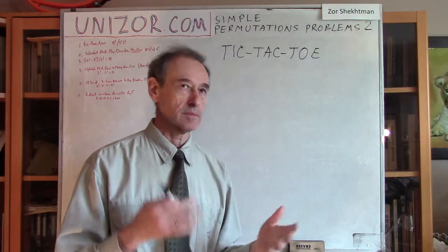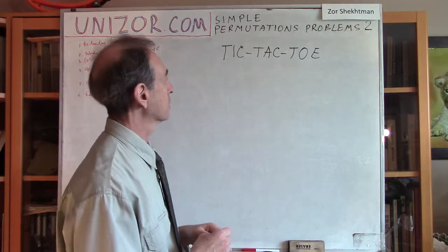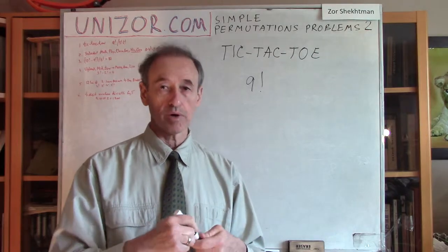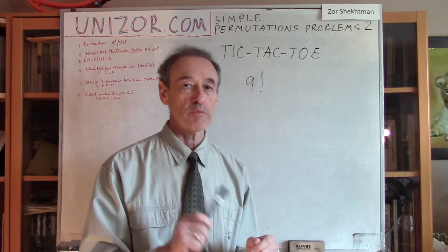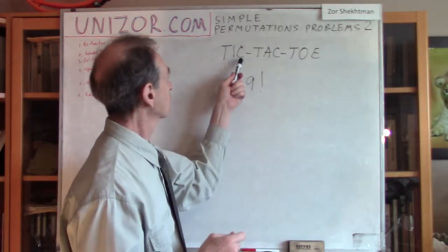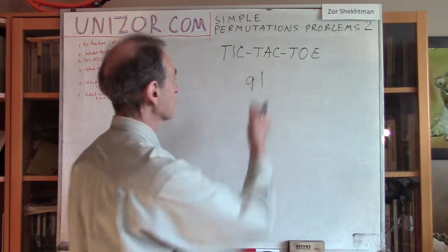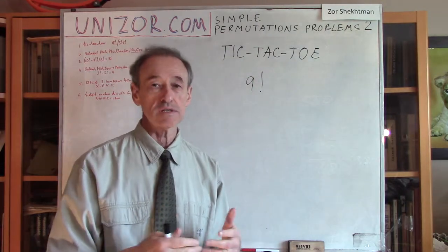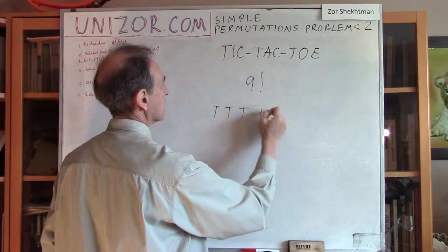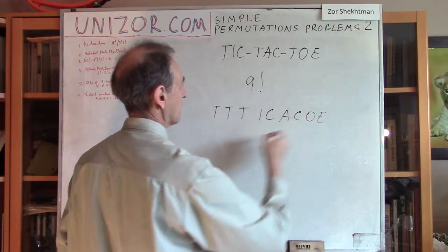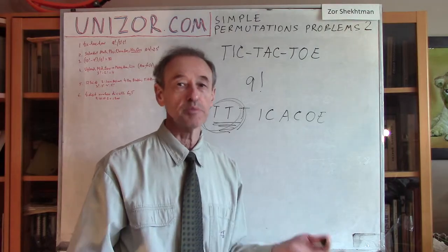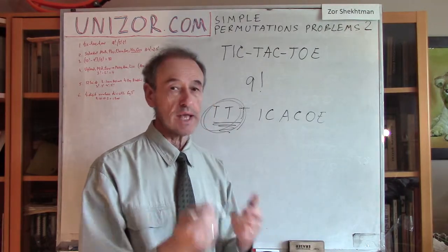What's the little twist in this particular problem? Why is it not nine factorial? Nine factorial is the number of all permutations of nine different characters. But in this case, we have the letter T repeated three times and the letter C repeated two times. So if I'm changing the places among the T's, it doesn't really change the ultimate word. No matter how many times I swap these T's, it will be exactly the same word.